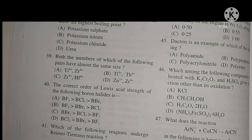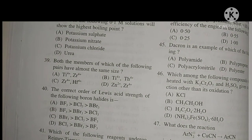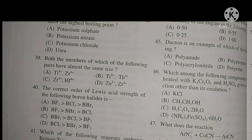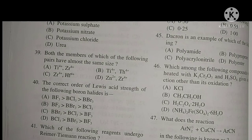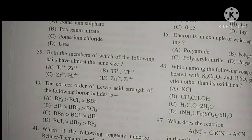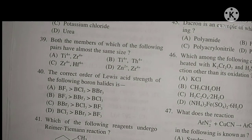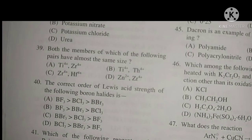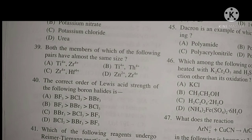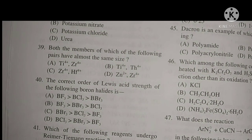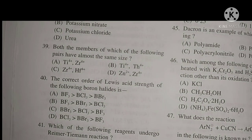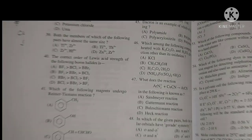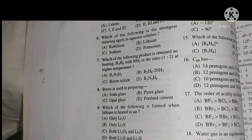Question 40: What is the correct order of Lewis acid strength of the following boron halides? This is the backbone of the boron family. BF3 should be strongest, but it is actually the weakest. The order is BBr3 > BCl3 > BF3. If you haven't seen it, I will put this link in the description box. The option is C.